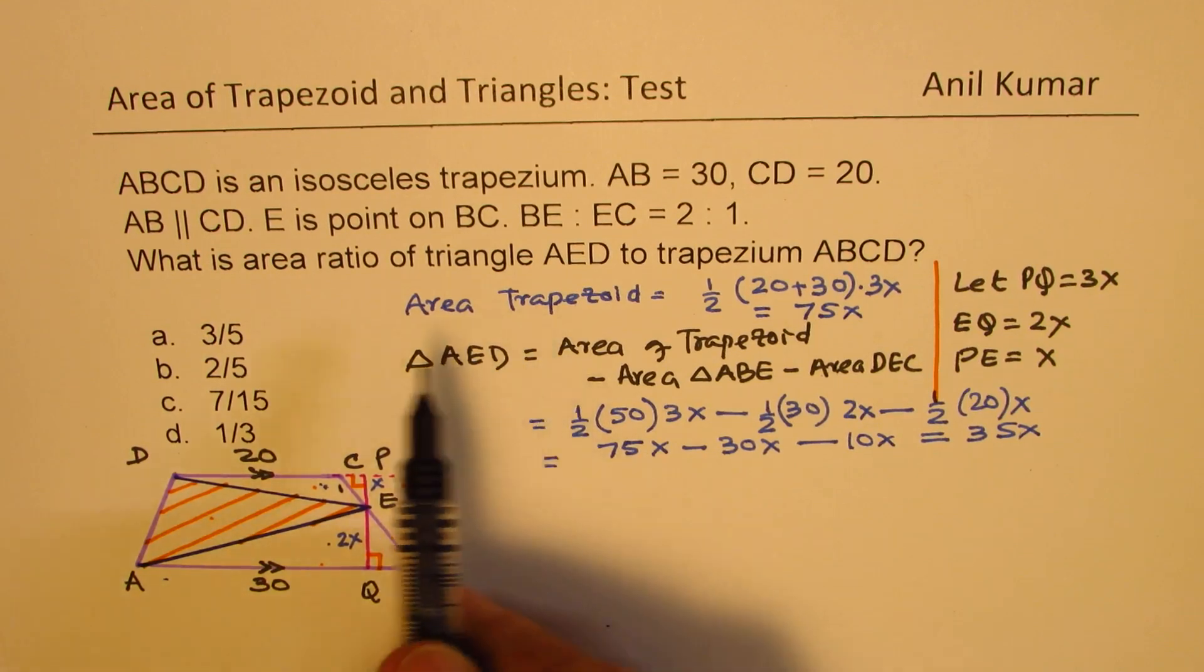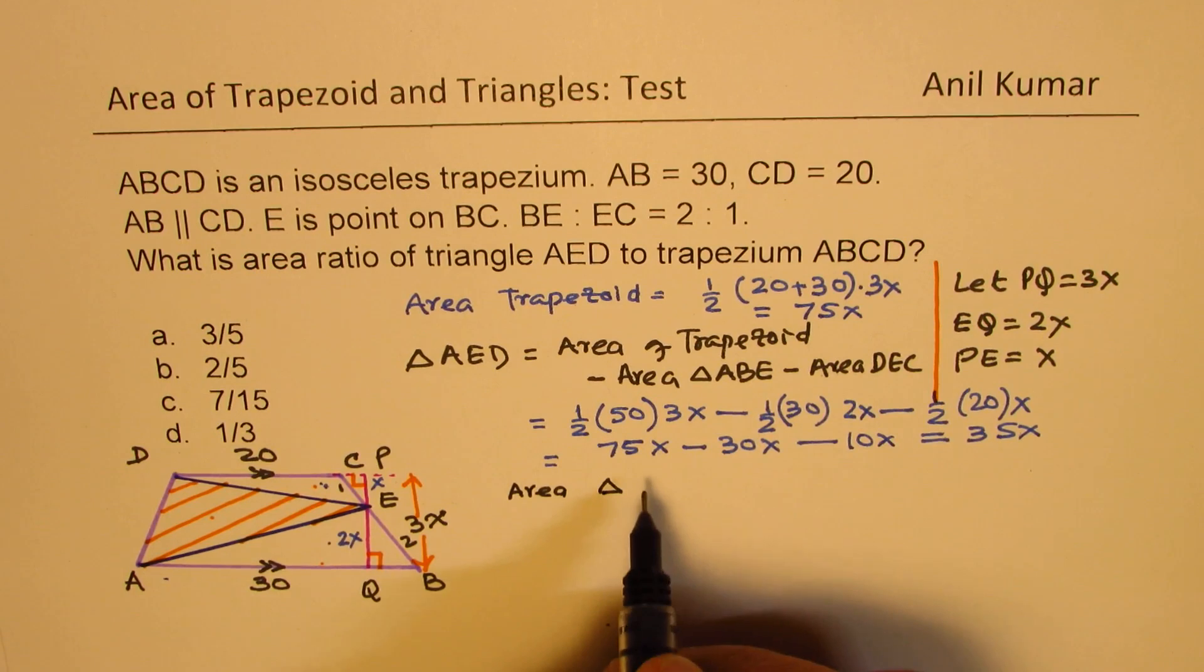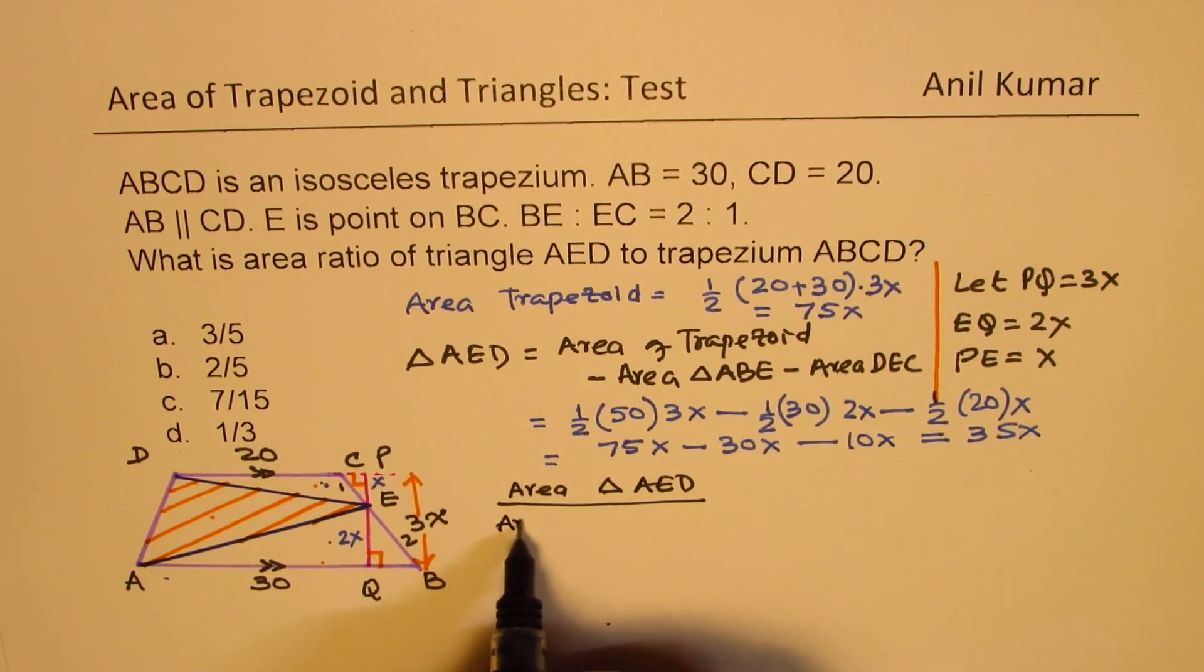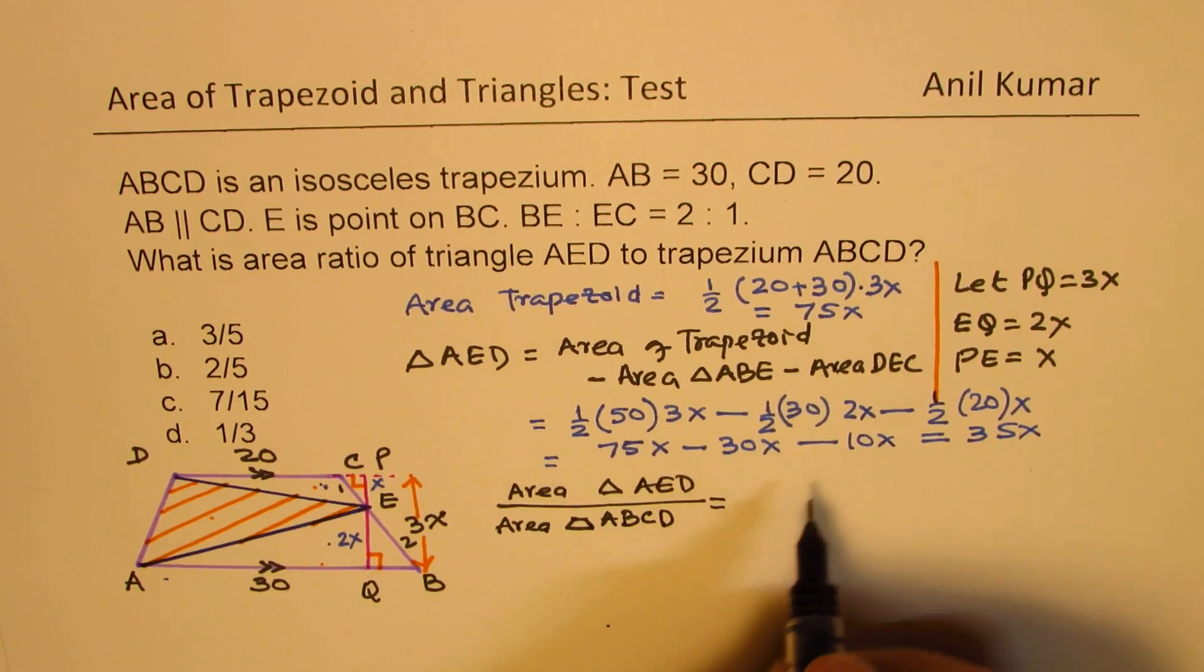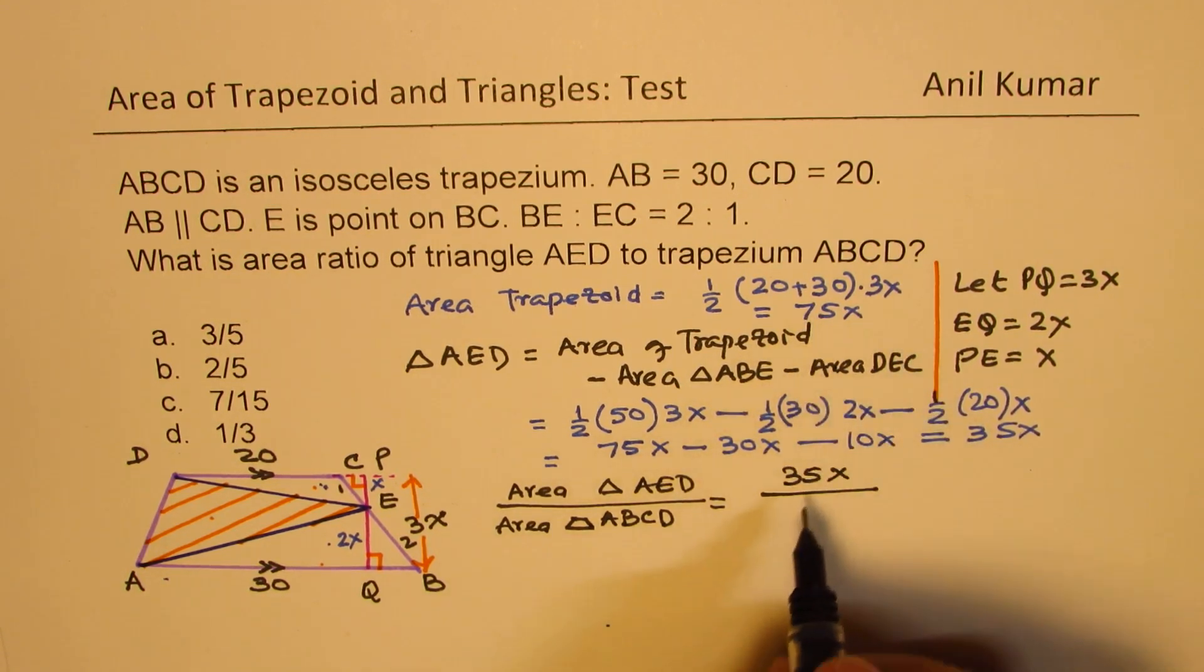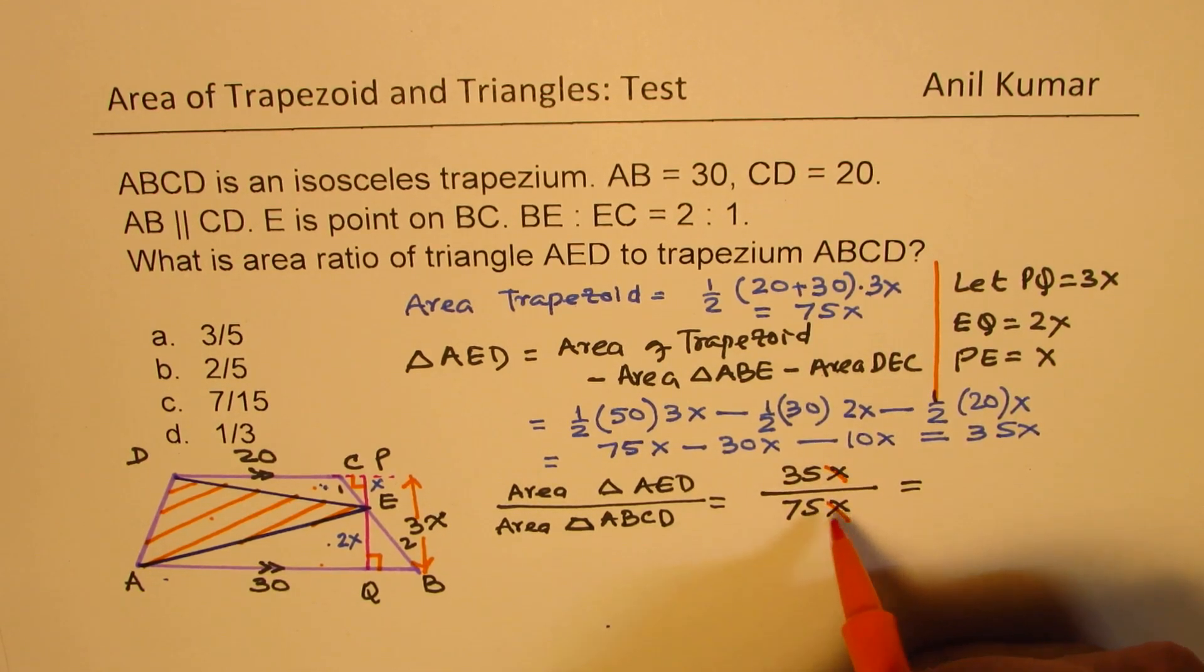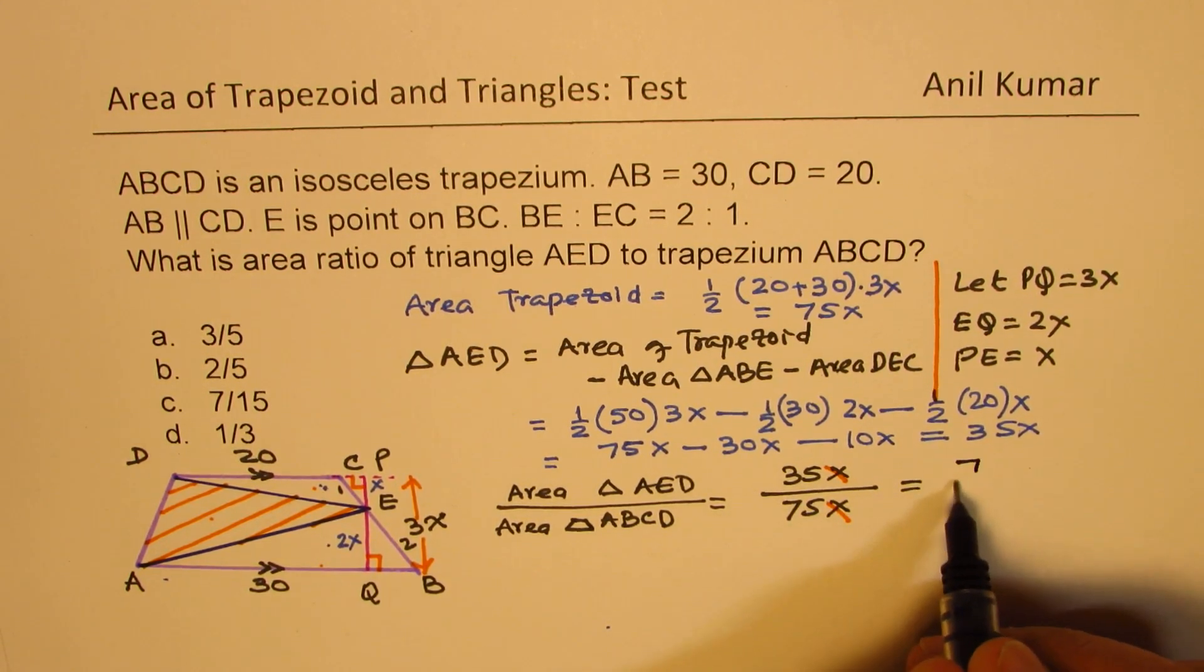So now we get the ratio of area of triangle. So area of triangle AED over area of trapezoid ABCD is equal to 35X over 75X. So X and X cancel. And you can now divide by 5. So when you divide by 5, we get 7 over 15.